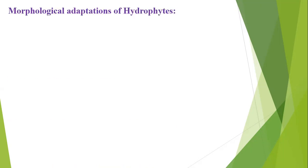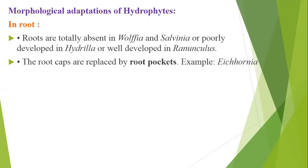Today you are going to learn about morphological adaptation of hydrophytes. Morphological adaptation refers to the external appearance. First, in the plants, the roots are totally absent in Wolffia and Salvia, but poorly developed or well-developed in Ranunculus.